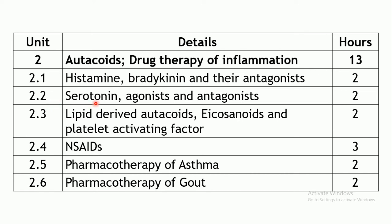The second chapter covers serotonin or 5-hydroxytryptamine, along with its agonists and antagonists which have therapeutic roles. Two hours are allotted for this chapter. The next chapter covers lipid-derivative autacoids — the eicosanoids.